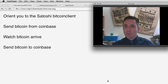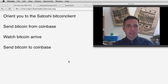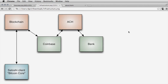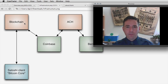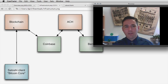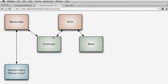Coinbase is an online wallet. Here's an example of the connections between the different services. The blockchain is a distributed record of accounts of those who have exchanged rights to bitcoins. My client, shown in blue, is running on my machine and connecting to the blockchain to send and receive Bitcoin. Coinbase also connects to the blockchain, and additionally connects to the ACH — the Automated Clearinghouse.